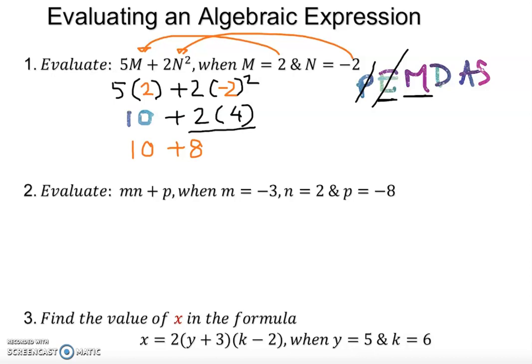So 10 plus 8. 4 times 2 is 8. And that will give me 18. And at the end we can just add or subtract at the same time. Very good. Let's move to the next one.